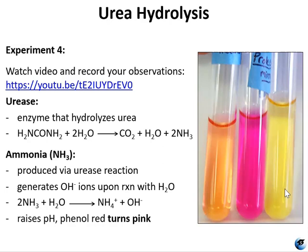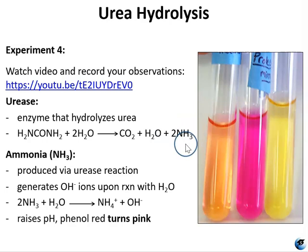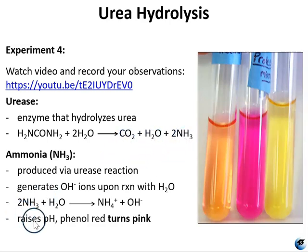Phenol red is the indicator used to expose any increase in pH. Urea and water are broken down by urease into carbon dioxide, water, and ammonia. This ammonia will raise the pH because it generates hydroxide ions upon reaction with water. The urease reaction: urea + water → CO₂ + water + ammonia, and the ammonia further breaks down into NH₄⁺ and hydroxide. This hydroxide is what turns the media from yellow to pink.